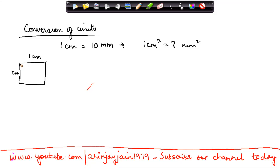Because 1 centimeter equals 10 millimeter, you would have 1, 2, 3, 4, 5, 6, 7, 8, 9, 10 millimeters on this side. And because this length is also 1 centimeter equals 10 millimeter, here also you would have 1, 2, 3, 4, 5, 6, 7, 8, 9, 10.